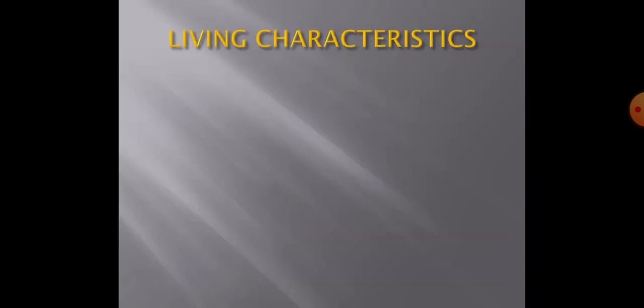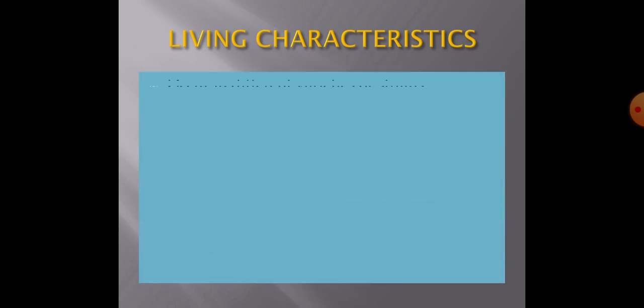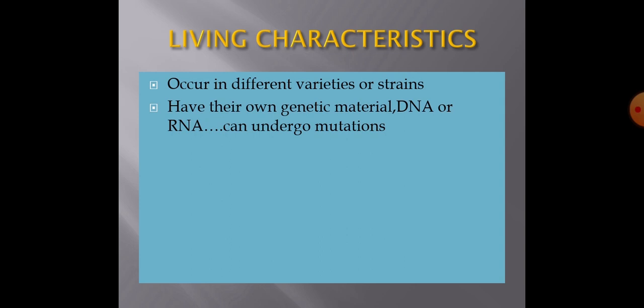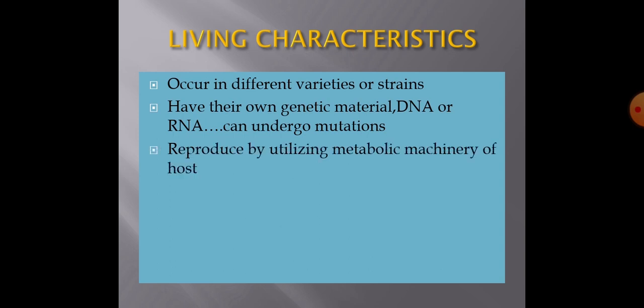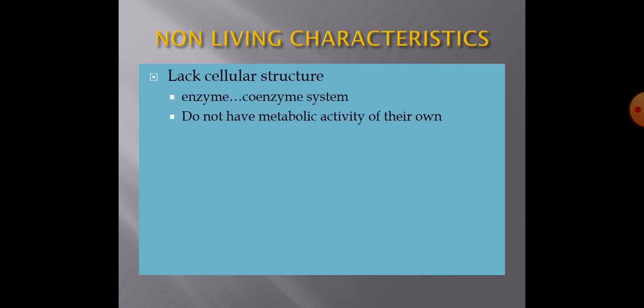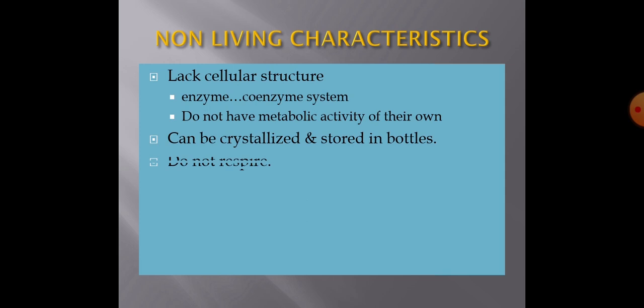Characteristics of viruses are both living as well as non-living. Living characteristics include: viruses occur in different varieties or strains; they have their own genetic material — DNA or RNA — which can undergo mutations; they can reproduce by utilizing the metabolic machinery of the host; and they get destroyed by ultraviolet rays. Non-living characteristics include: viruses lack cellular structure and have no enzyme-coenzyme system, so they have no metabolic activity of their own; they can be crystallized and stored in bottles, remaining active in dormant form outside the host for long periods; and they do not respire.